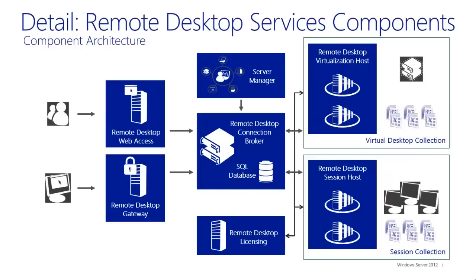There are a lot of components of the remote desktop services and each and every component plays a specific job. Remote desktop web access is a role which provides you a web interface and lets the end user access the RDS based environment. Remote desktop gateway is a server where we configure the RAP and CAP policies. Remote desktop connection broker provides capability for session reconnections as well as fair share. Remote desktop licensing server is a role where we configure all our licenses. Remote desktop virtualization host is a role configured on a physical host to create virtual machines in a typical VDI scenario.